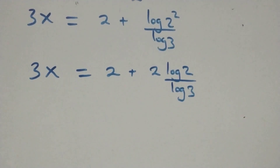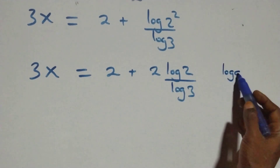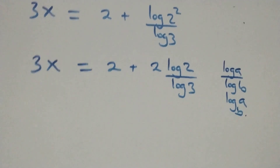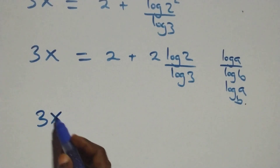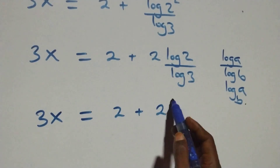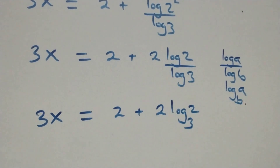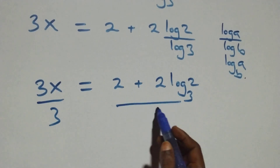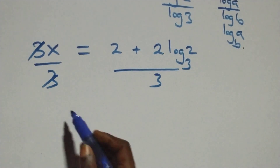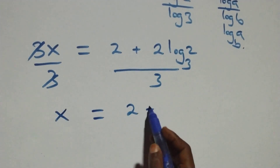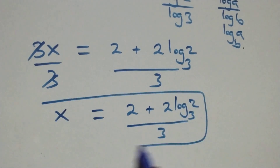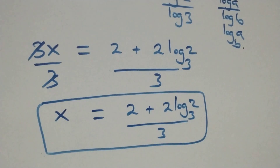We apply the change of base rule: log a over log b equals log a to base b. So what we have becomes 3x equals 2 plus 2·log₂ to base 3. Next, dividing both sides by 3, we get x equals (2 plus 2·log₂ base 3) all over 3.